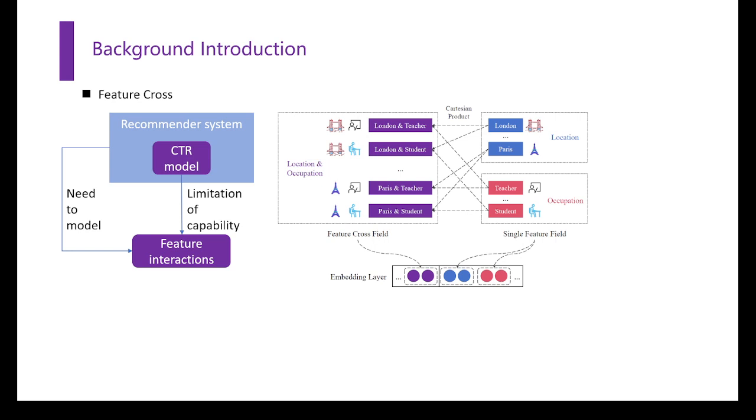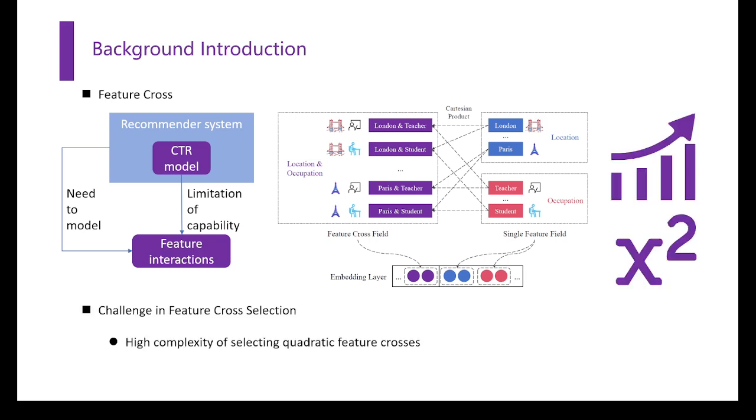While only a small subset of all valid feature crosses is helpful, selecting them efficiently with existing feature selection methods is challenging because the number of feature crosses increases quadratically with the number of single features. Besides, the importance of feature crosses also needs to be decoupled from the original importance of two single features to reduce redundancy.